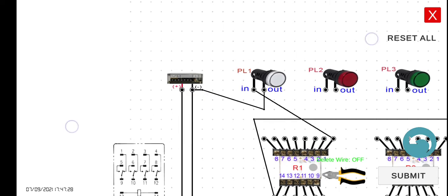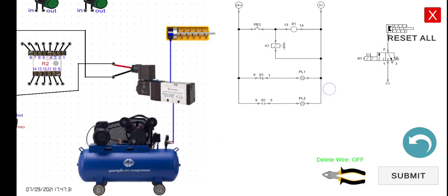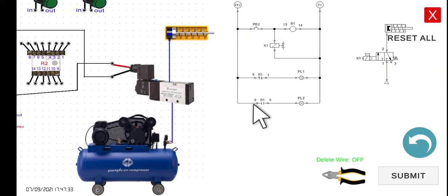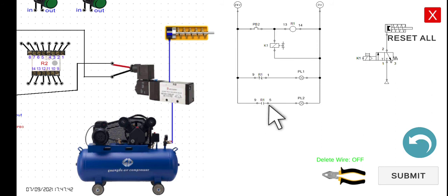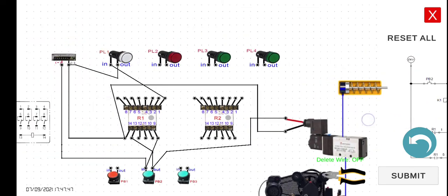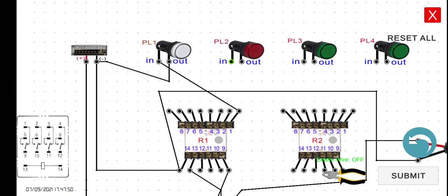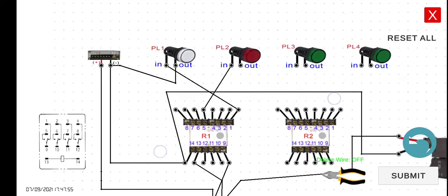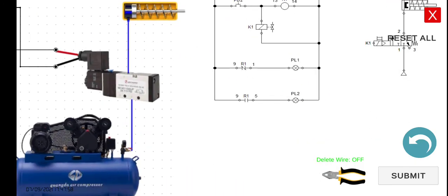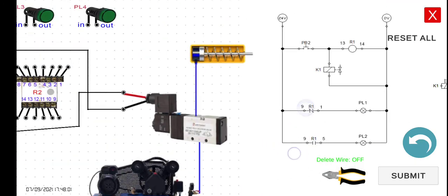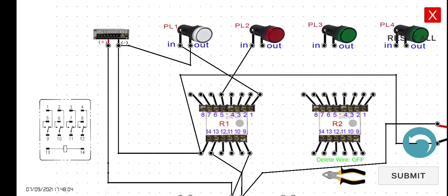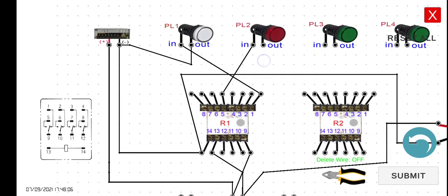Next, we have to connect the last line, which is pin 9 again — same as with the relay. Pin 9 is already connected, so let's proceed with pin 5. Pin 5 is connected to the input of PL2 — same R1. And then the output is connected to the 24 volts, so we can connect it to the output of PL1.